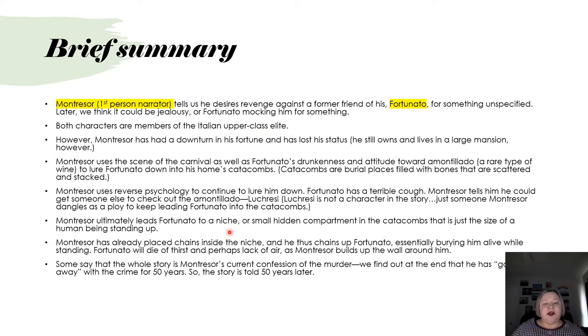Montresor ultimately leads Fortunato to a niche, or a small hidden compartment in the catacombs that is just the size of a human being standing up. Montresor has already placed chains inside the niche, chains and handcuffs, and he thus chains up Fortunato, essentially burying him alive, handcuffed and chained to that niche while he's standing. Fortunato will die of thirst and perhaps lack of air as Montresor builds up the wall around him. So after he chains him, he uses trowel and mortar to build up the niche in the wall with bricks.